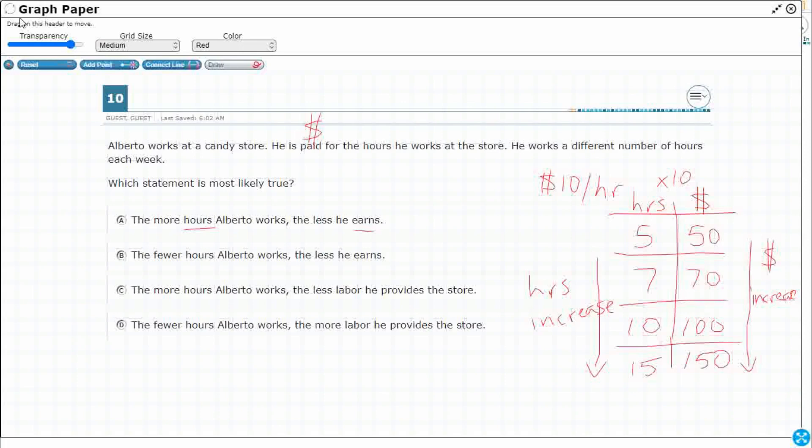Let's take a look at our answer selections here. The more hours that he works, so this is the increase in hours, the less he earns. No, that doesn't match what happened here. The more he worked, the more money he got. So that's actually kind of the opposite. So it's not A.